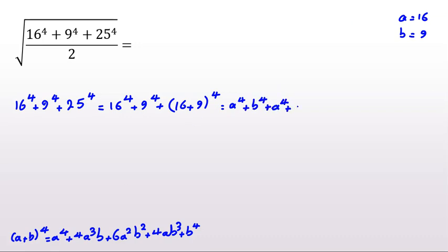We can write it as a to the 4 plus b to the 4, and this part is a plus b. It will be a to the 4 plus 4a cubed b plus 6a squared b squared plus 4ab cubed plus b to the 4. And then we divide this by 2 because inside the square root we have 2 in the denominator.